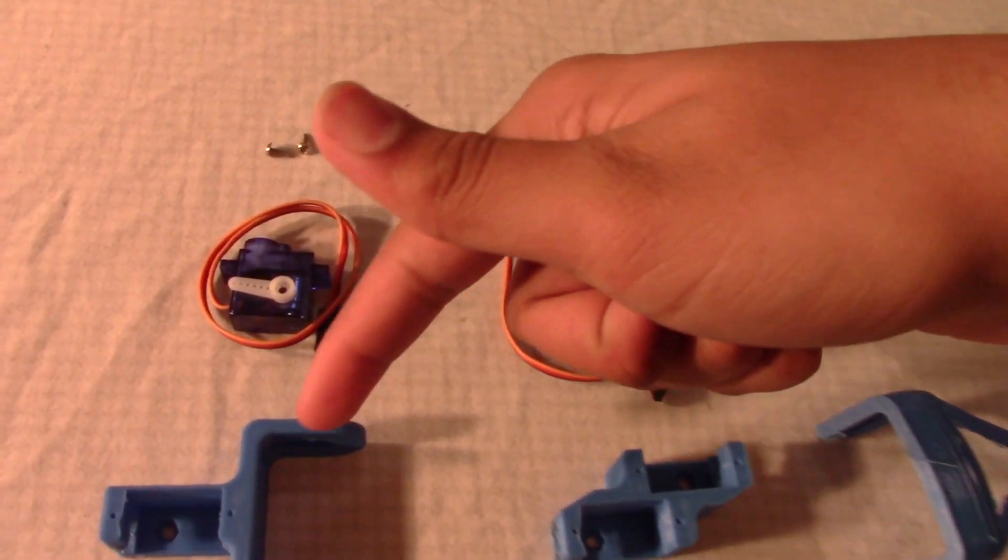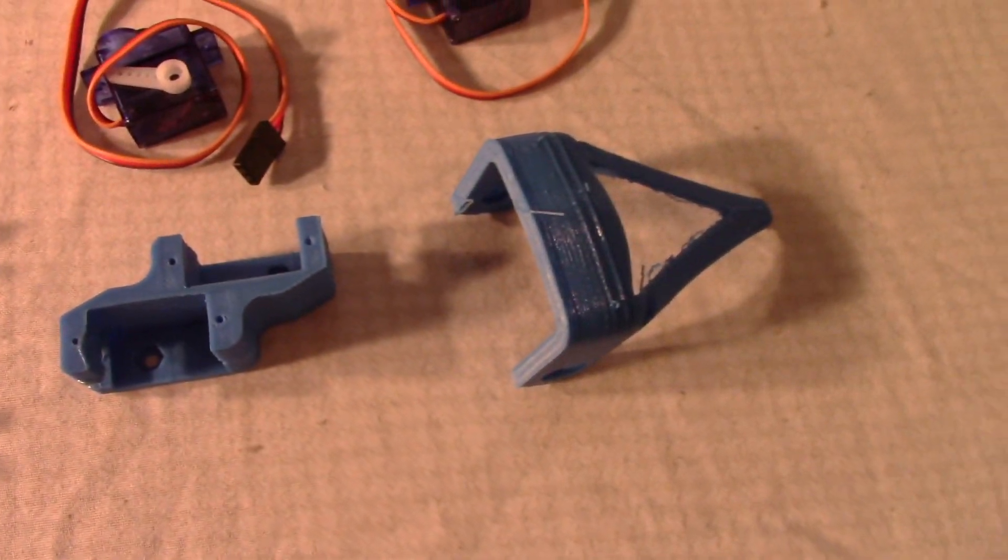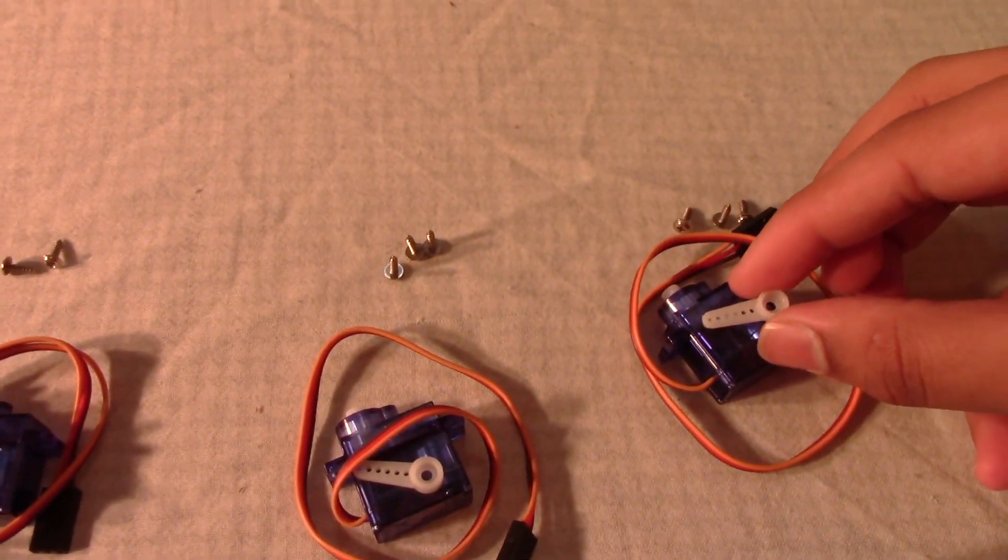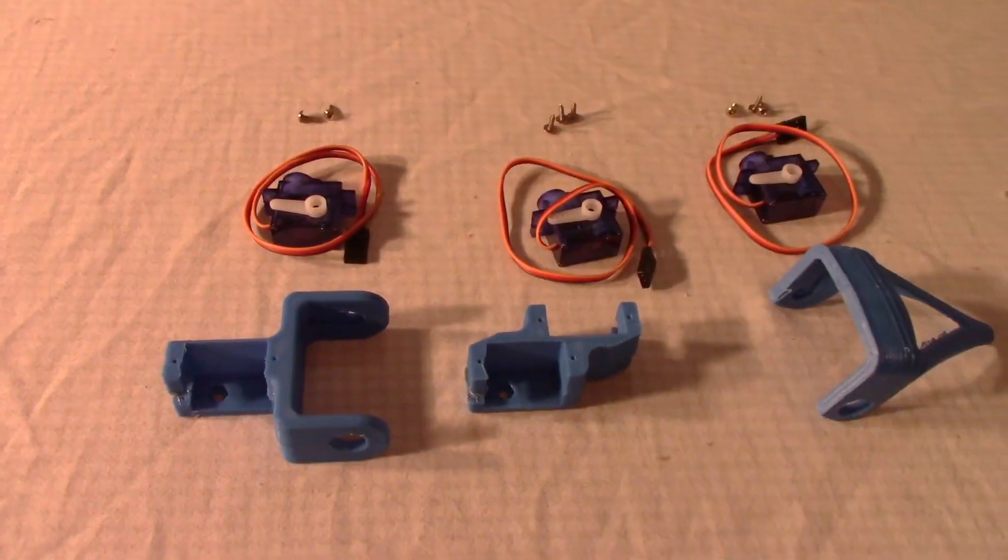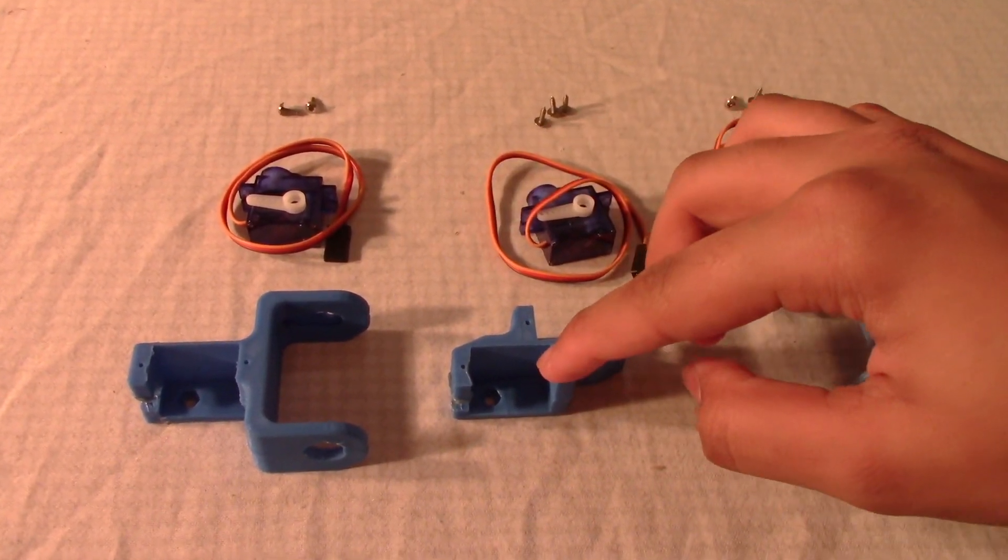To assemble one of the legs you will need the following: these three 3D printed pieces, three servos, three half shafts, and eight screws. For the first step we'll need this piece so we can move these two back and we can also move one of the servos back.